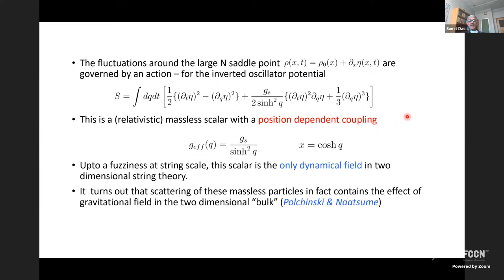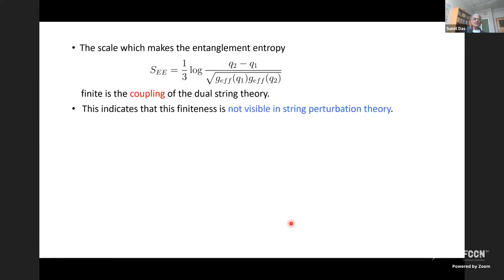This scalar is the only dynamical field in the theory, yet as famously pointed out by Polchinski and Natsume, the scattering of these fields encodes the effect of a gravitational field. This is a theory in 1+1 dimensions so there are no gravitational waves, but there are Coulomb forces of gravity, which turned out to be massive. Polchinski and Natsume showed that by looking at the S-matrix carefully, one can see the effect of this Coulomb gravitational field. The scale of the entanglement entropy is the coupling of the dual string theory, indicating that this finiteness will not be visible in string perturbation theory.